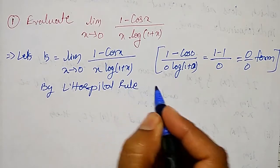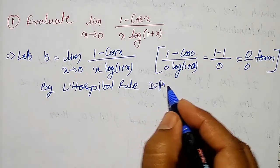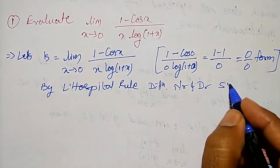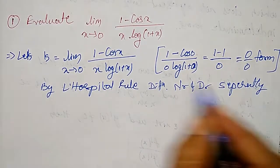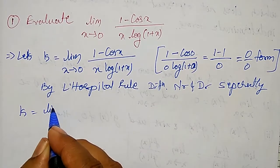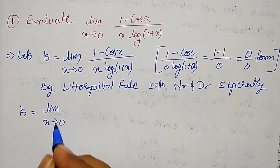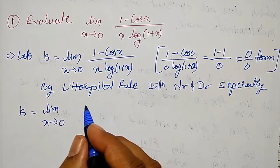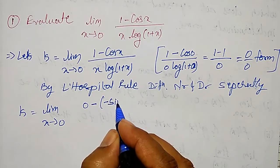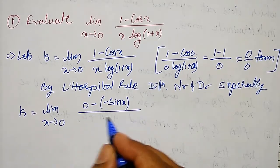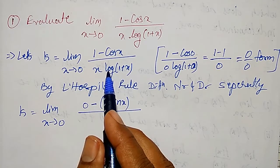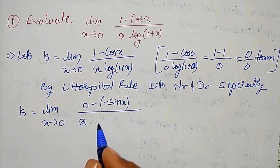By L'Hôpital's rule, differentiate the numerator and denominator separately. k equals the limit as x tends to 0 of the differentiation of the numerator: differential of 1 is 0, minus cos x is minus sin x. The denominator is x into log(1+x), so I apply the product rule: x into the differentiation of log(1+x), which is 1 divided by 1 plus x, plus log of 1 plus x.